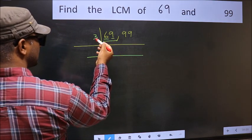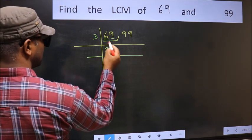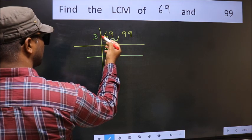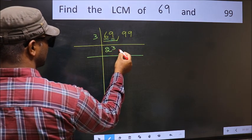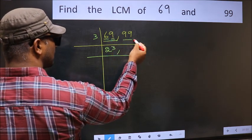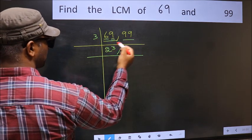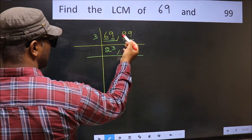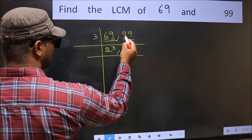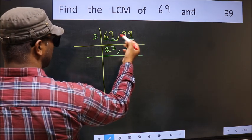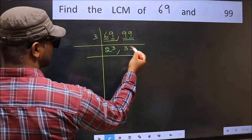First number 6, when do we get 6 in 3 table? 3 times 2 is 6. The other number 9, when do we get 9 in 3 table? 3 times 3 is 9. The other number 99 is divisible by 3. First number 9, 3 times 3 is 9. The other number 9, 3 times 3 is 9.